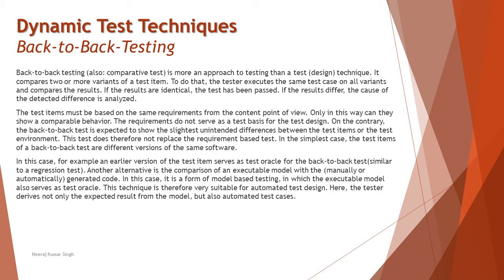In simple cases, the test items of a back-to-back test are different versions of the same software - where core functionality remains the same but certain things have been modified, which is what we call a different variant. The same test is executed across all variants to verify they still produce the correct result. For example, an earlier version of the test item serves as a test oracle. An alternative is comparison of an executable model with generated code, manually or automatically - this is a form of model-based testing where the executable model also serves as a test oracle. The technique is therefore very suitable for automated test design, allowing the tester to derive not only expected results but also the automotive test cases from the model.